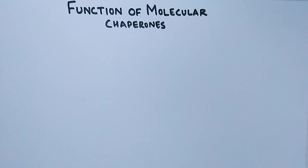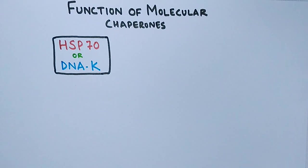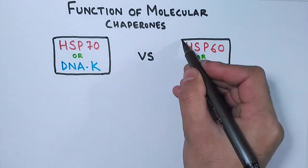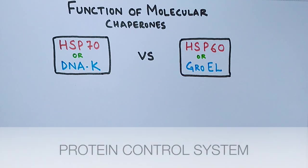The first one is HSP70, also called DNAK chaperone, and the other being HSP60, also called GroEL chaperone. These both chaperones have diverse functions in protein control systems where protein folding and prevention of degradation of proteins is the main function.